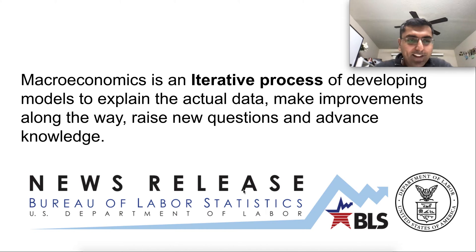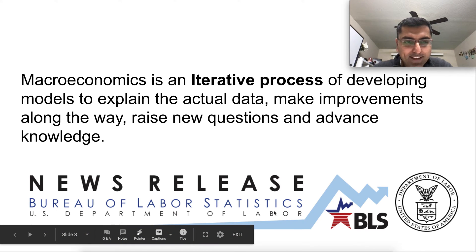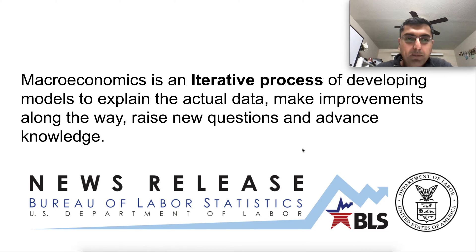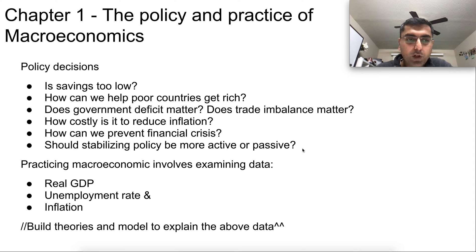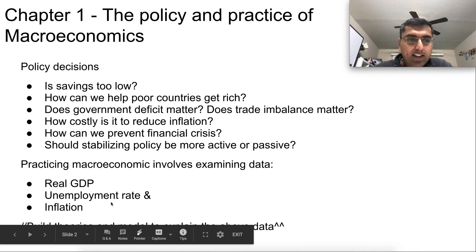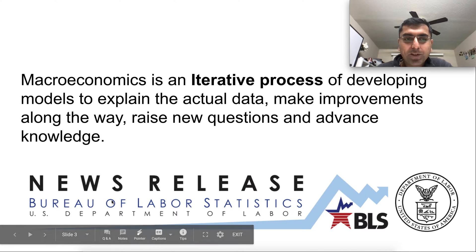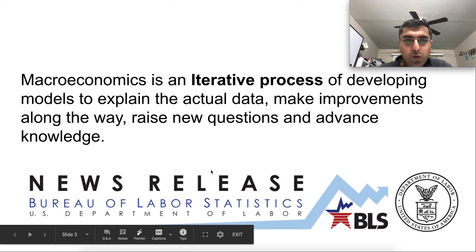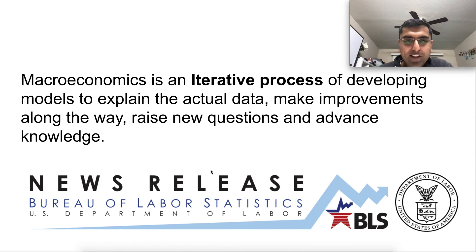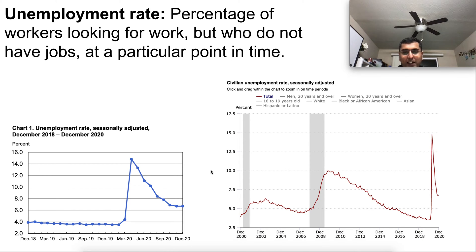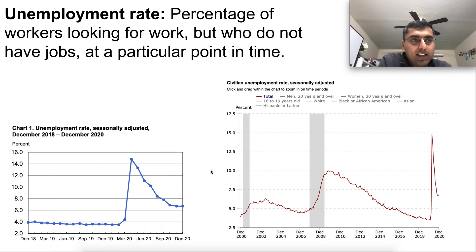Our biggest resource is going to be the Bureau of Labor Statistics — it publishes data and does extensive work in the United States to publish all three of these data points: GDP, unemployment rate, and inflation. The site bls.gov is going to be our new friend in this subject. I took some recent data points to make these concepts real.